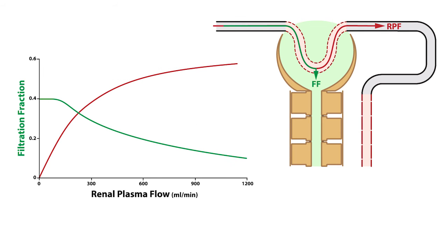For example, the green line represents the relationship between filtration fraction and renal plasma flow, and it shows that filtration fraction decreases as renal plasma flow increases. Also, at very low renal plasma flow, the filtration fraction plateaus at about 40%. This occurs because as renal plasma flow decreases, the filterable substances in the glomerular capillaries have more time to be filtered, which explains the increase in filtration fraction even though GFR decreases.